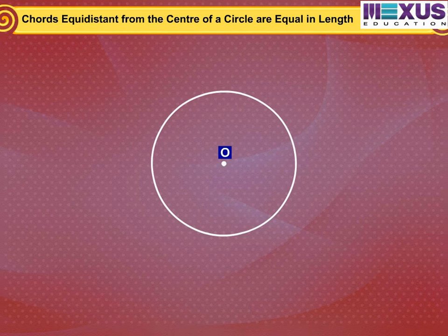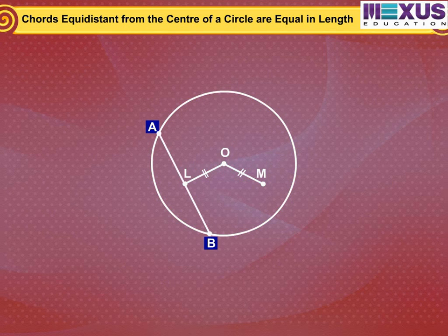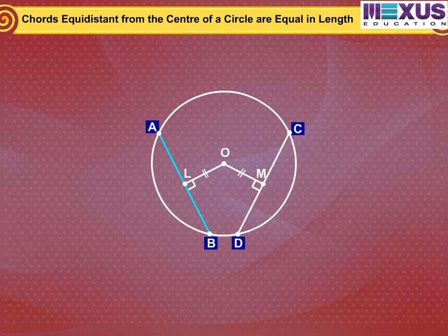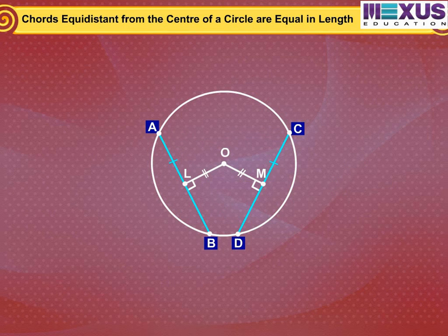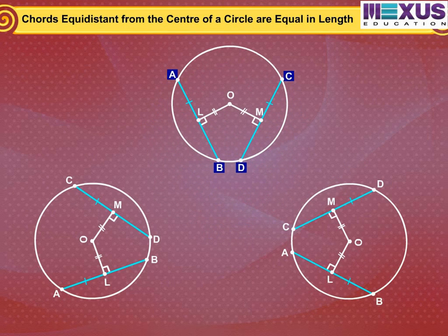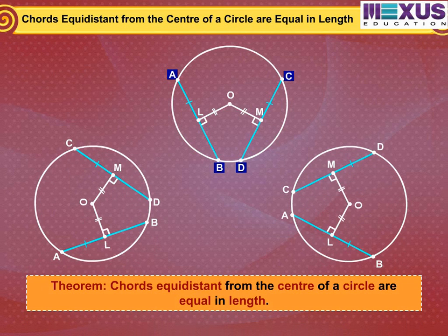From the center O, draw two line segments OL and OM of equal length and lying inside the circle. Then draw chords AB and CD of the circle perpendicular to OL and OM respectively. Measure the lengths of AB and CD — both are equal. Repeating the activity for more equal line segments and drawing the chords perpendicular to them verifies that the converse is also true: chords equidistant from the center of a circle are equal in length.